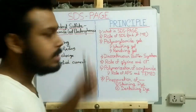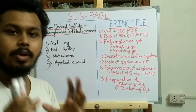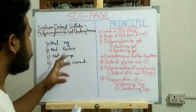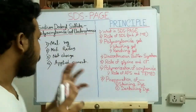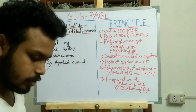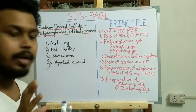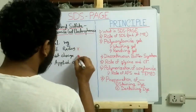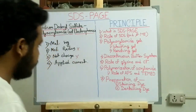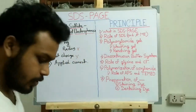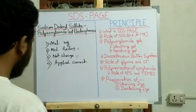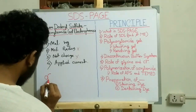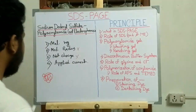In SDS-PAGE we basically separate proteins only according to their molecular weight. Throughout the process we use a particular amount of current. So we have to nullify the other two factors — molecular radius and net charge — and this is done by SDS.